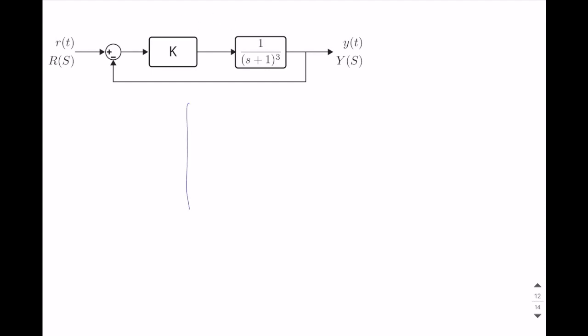In the root locus, we have triple roots here at minus 1. We know that this part will be on the root locus because this is an odd number. Since it has triple roots, it will have three asymptotes which have 120 degrees angles. So this is the root locus. It says that the system is stable for small values of k. And at some point, the root locus crosses the imaginary axis and it becomes unstable. If you check this point using root locus techniques that the professor has taught you before, you will see that here k will be equal to 4.